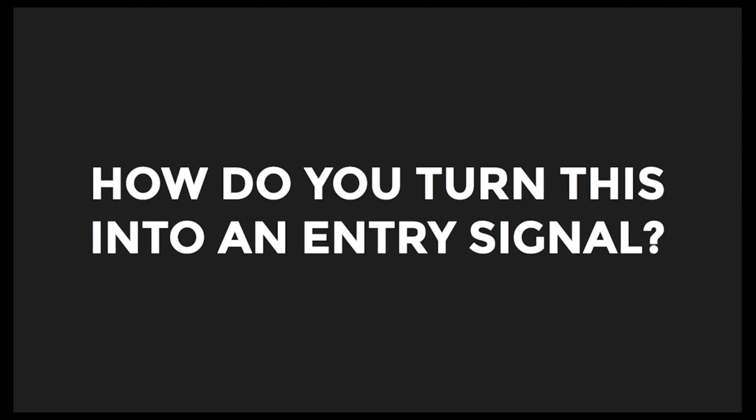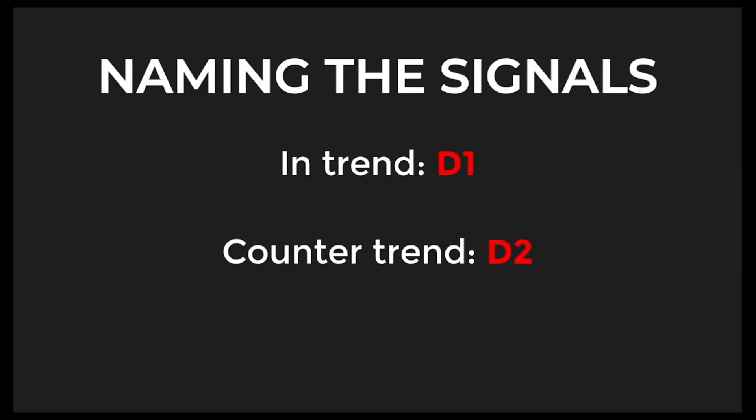Now that we've gone through all of these markups showing you how to draw divergence using Reaction Point 1 and Reaction Point 2, you should understand what divergence is, where you should be looking for it, what it's telling us, and how to draw it. So you're probably itching to figure out how to turn this into an entry signal. Are you ready for this? Let's break it down a little bit more before we jump into Chapter 3.